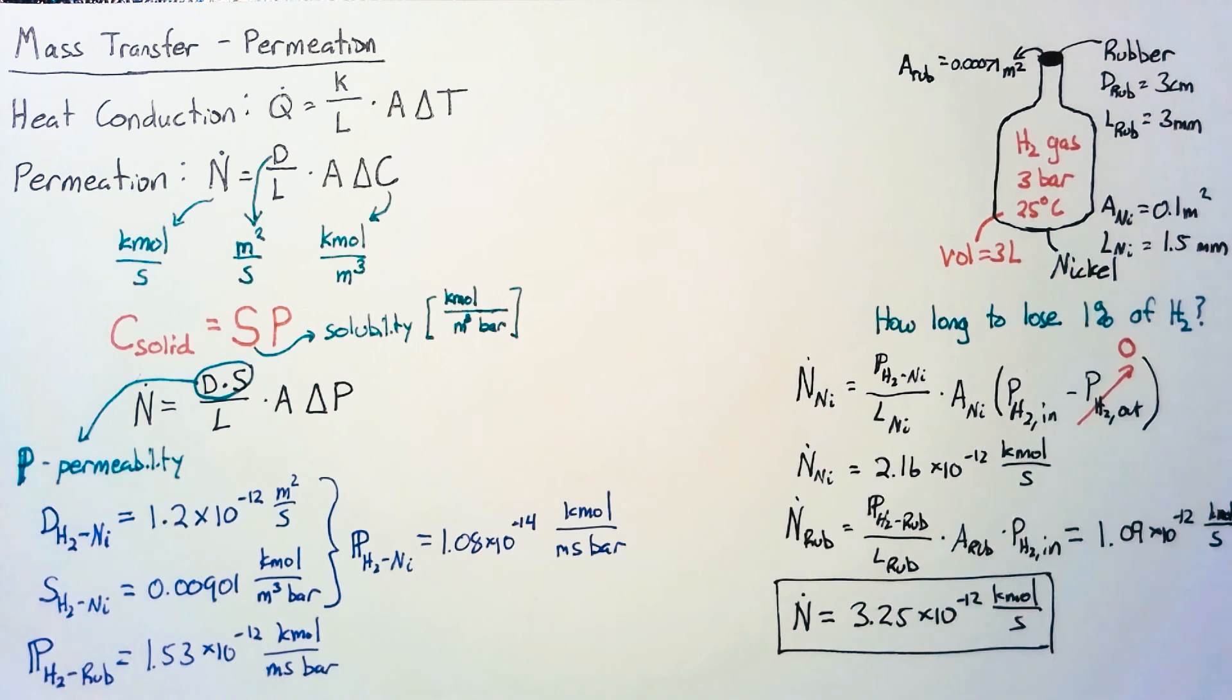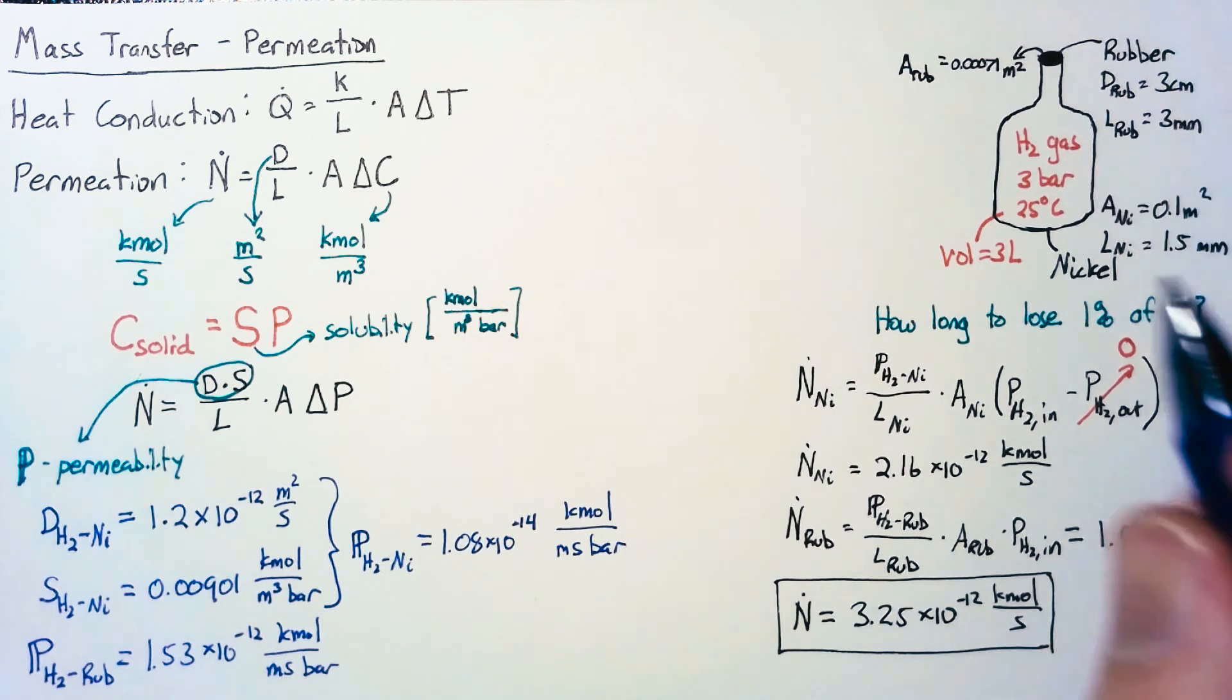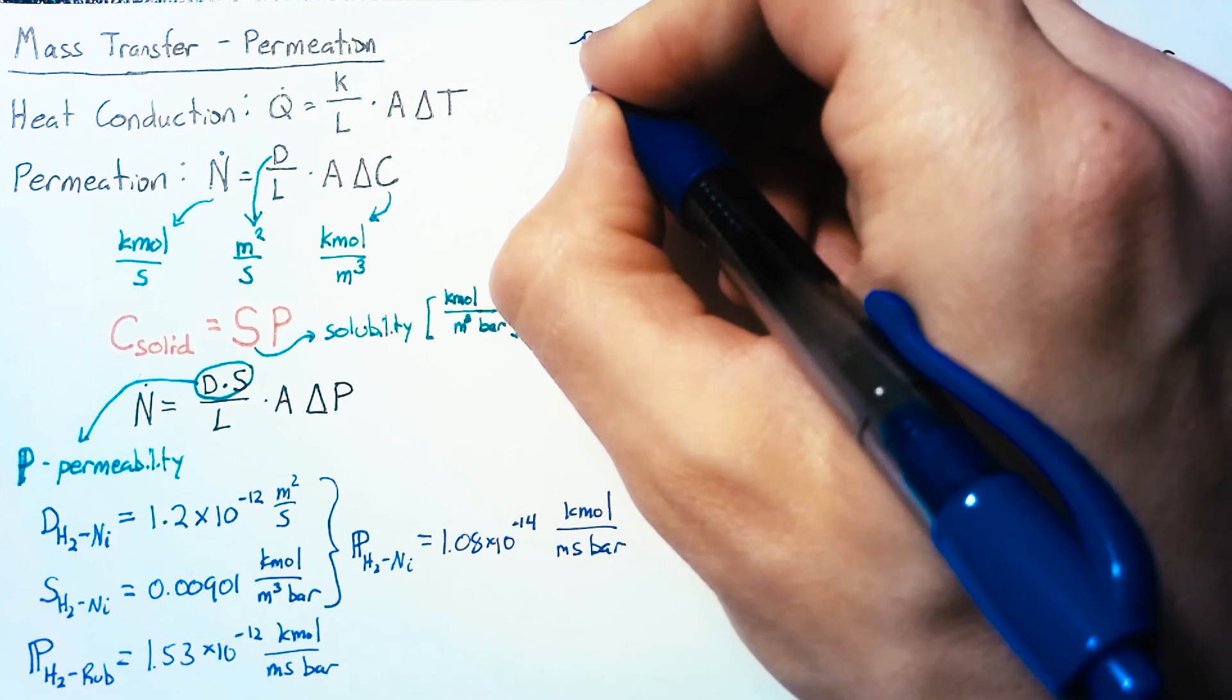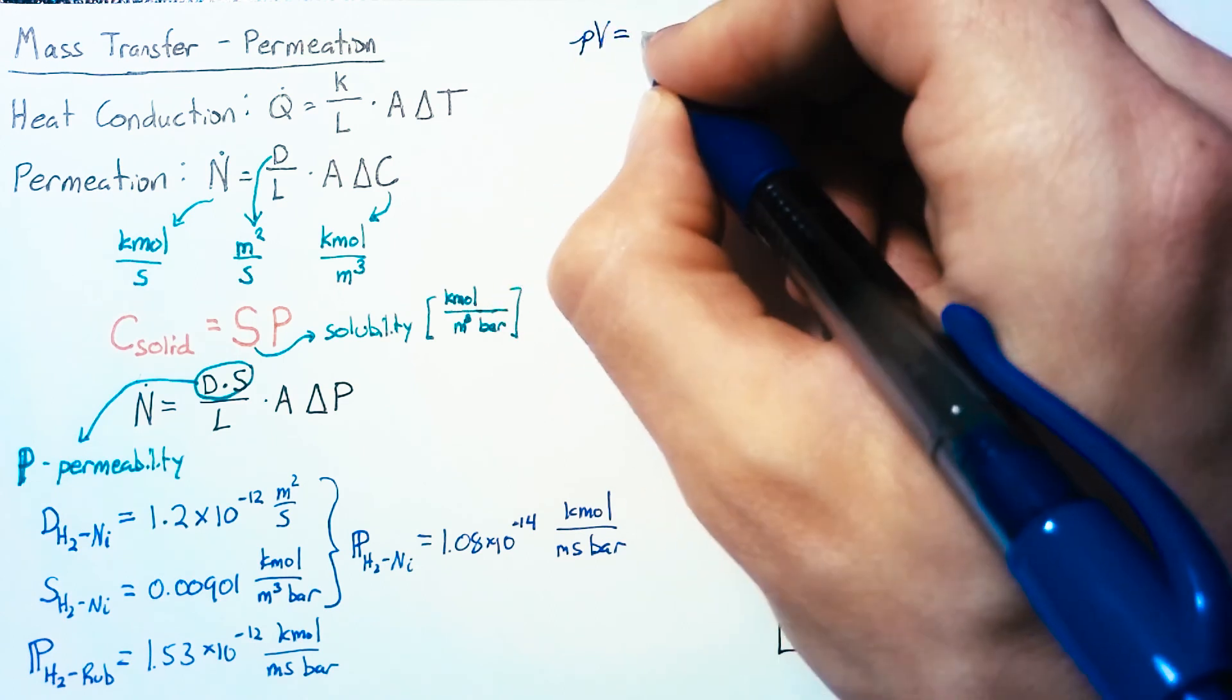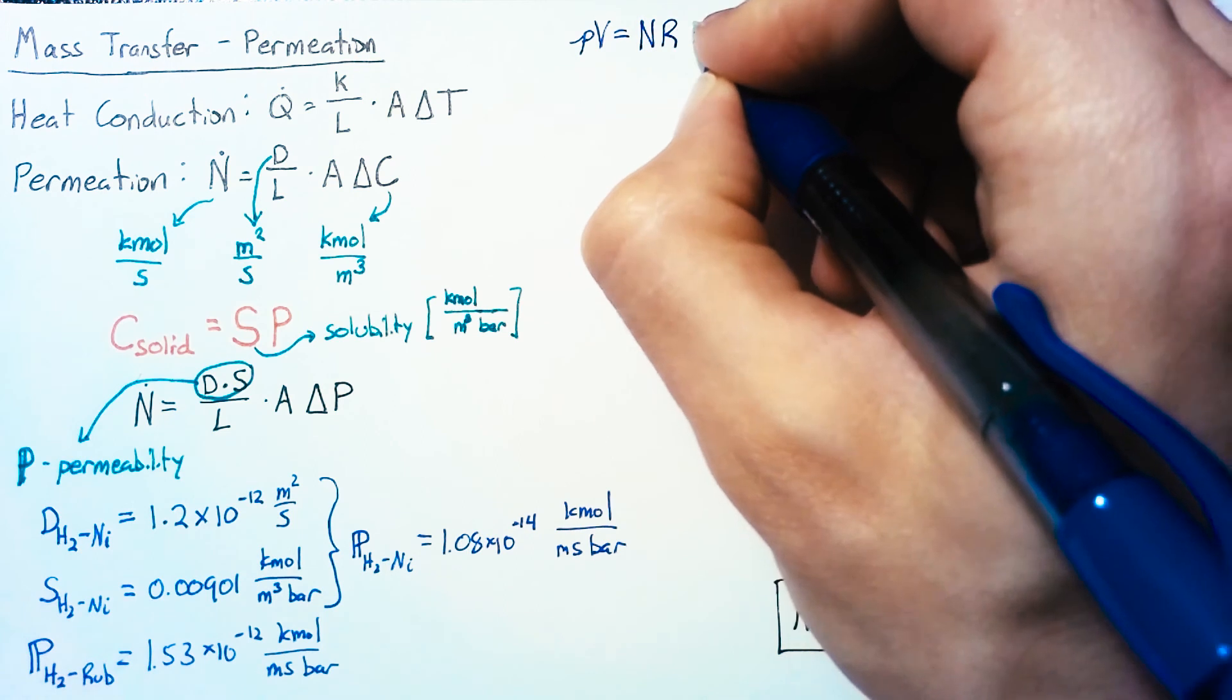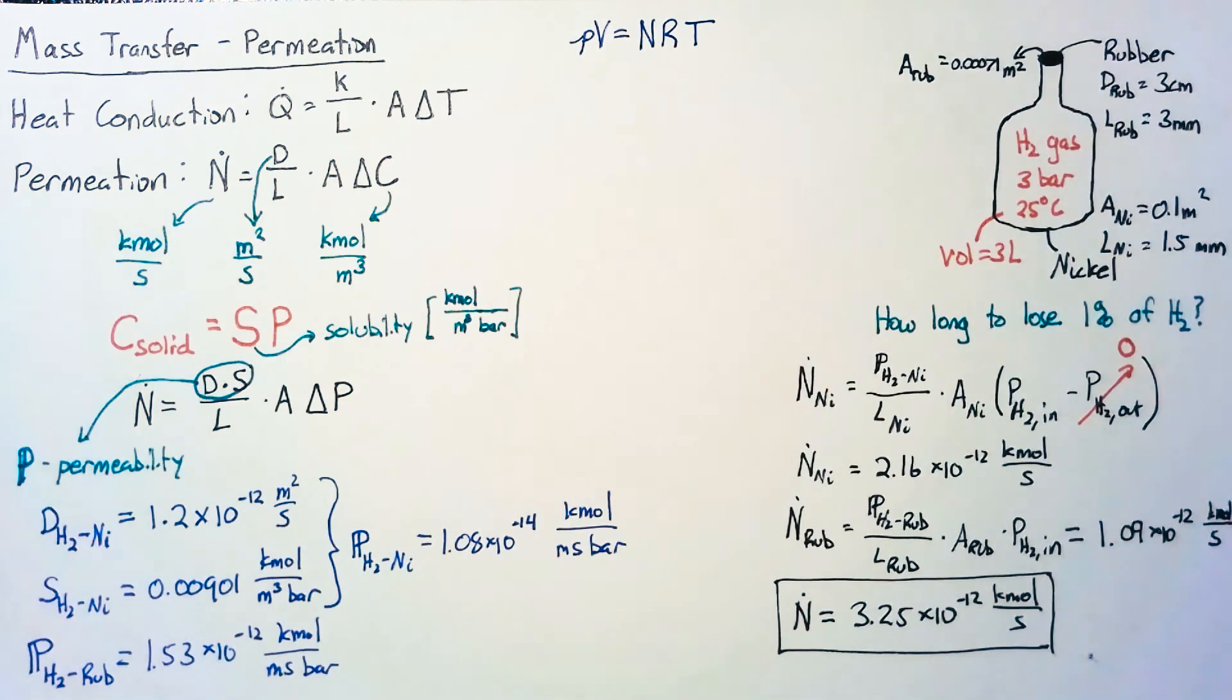To answer our original question, we need to use this along with the total number of kilomoles in our flask to begin with. The ideal gas law says that pressure times volume equals the number of moles times the universal gas constant times temperature in Kelvin.